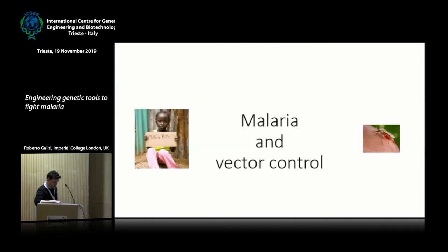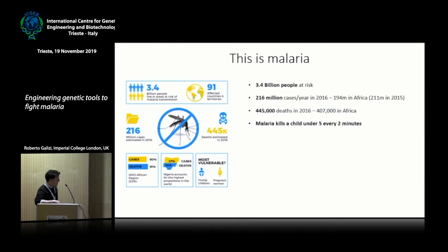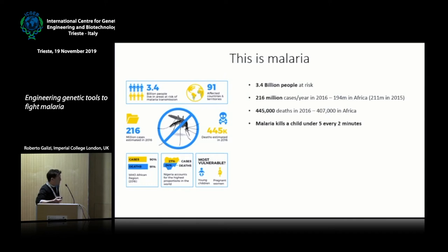So going to give you a bit of background on the problem. Malaria, as we probably all know, is still a big burden. It still costs a lot of deaths — more than 400,000 per year, which is incredible. Lots of cases, millions of cases, and it's very sad to hear that it still kills a child every two minutes, a child under five.